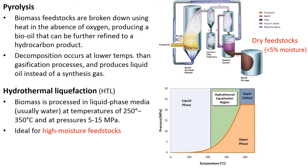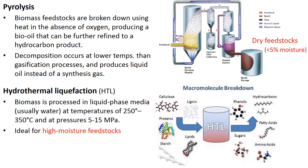In these processes, different biopolymers present in biomass get depolymerized — for example, lignins form phenols, lipids form hydrocarbons, and fatty acids form hydrocarbons.